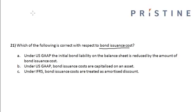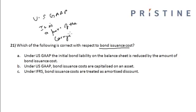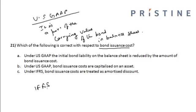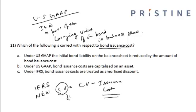US GAAP and IFRS treat the bond issuance cost differently. Under US GAAP, it is a part of the carrying value of the bond on the balance sheet. Whereas under IFRS, the bond issuance cost is reduced from the carrying value of the bond — that is, new carrying value equals original carrying value minus issuance cost. This carrying value is then reported in the balance sheet.